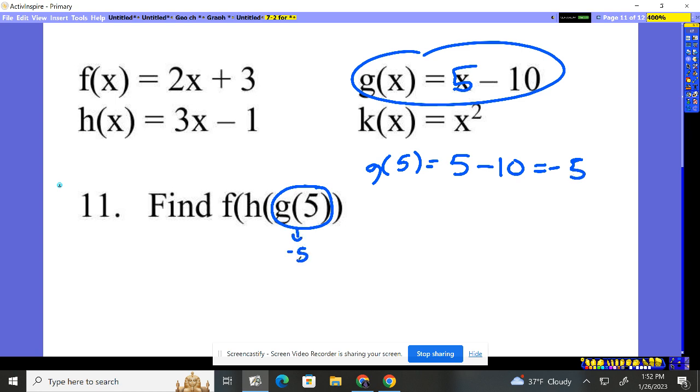So that's negative 5. Now we want to plug negative 5 into the h function. We're plugging that answer into the h function, which is right here. H function says do 3 times whatever they give you. They gave me negative 5. Take away 1. 3 times negative 5, negative 15 minus 1, negative 16. So this answer is negative 16.